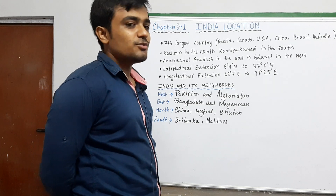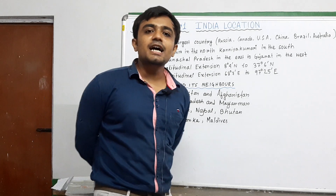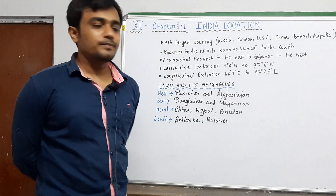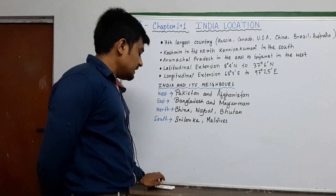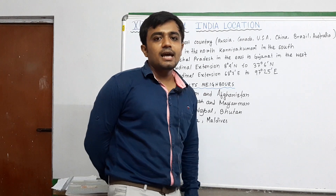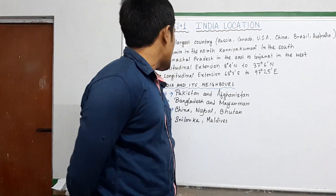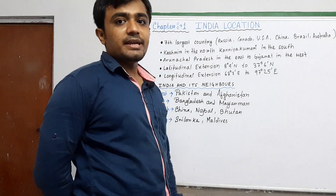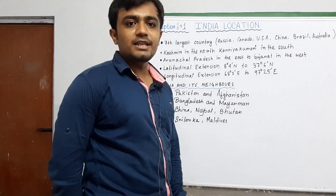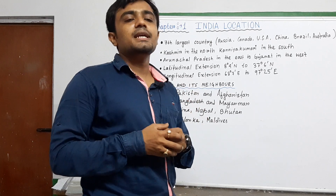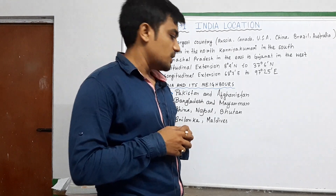Today I am going to teach you Chapter 1 from the book India Physical Environment. The chapter name is India Location. In this chapter we will learn about India's location, India's size, India and its neighboring countries, and some basic information regarding latitudes and longitudes.